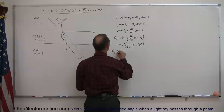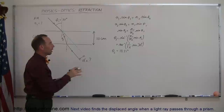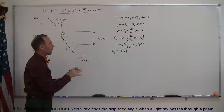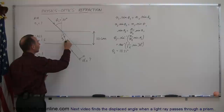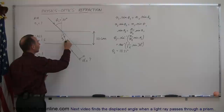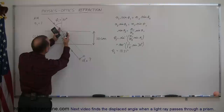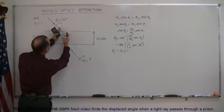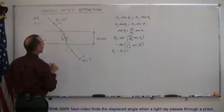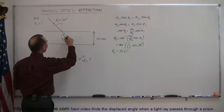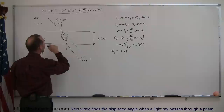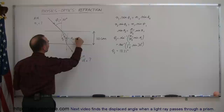So theta sub 2 equals 18.21 degrees — I keep an extra significant figure to avoid round-off error at the end. The ray travels across the glass at a slight angle, so this becomes the angle of incidence at the second boundary; let's call that theta sub 3. Notice we have two parallel lines bisected by this ray of light, so these two angles are alternate interior angles and must be equal. Therefore, theta sub 3 equals theta sub 2, which equals 18.21 degrees.